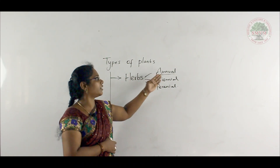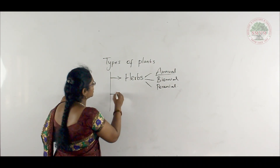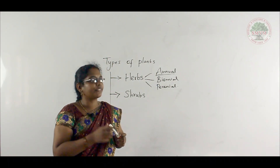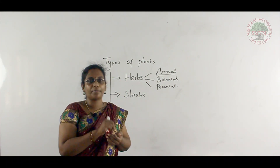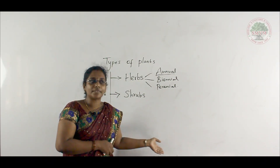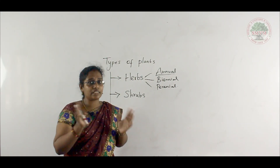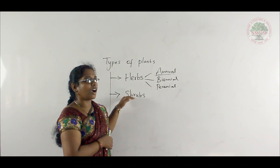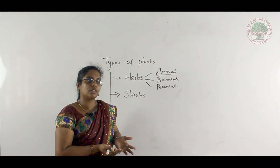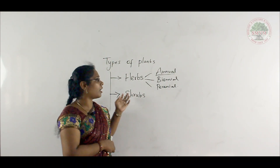So far we have discussed herbs, which are further differentiated into annual, biennial, and perennial plants. Next, we are going to discuss shrubs. Shrubs are plants somewhat bigger than herbs but smaller than very big trees — intermediate in size. Shrubs have plenty of branches that are knitted together and look like a bush. Examples include hedge plants like rose and mehendi.